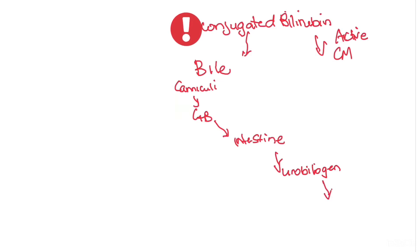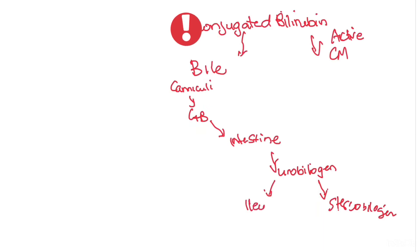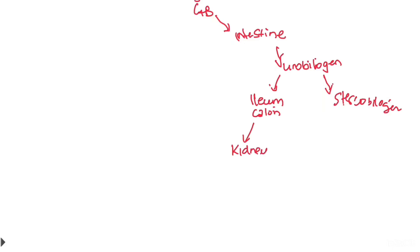Urobilinogen is excreted into the feces as stercobilinogen, which accounts for 90% of the bilirubin and is responsible for the color of feces. Some urobilinogen is reabsorbed in the ileum or colon, returns to circulation, and is excreted by the kidneys as urobilinogen, giving urine its yellow color.